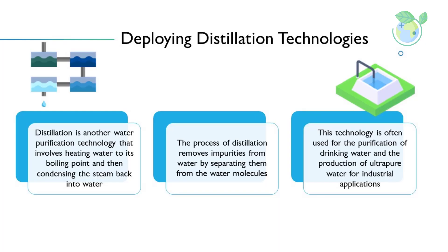Distillation is another water purification technology that involves heating water to its boiling point and then condensing the steam back into water. The process of distillation removes impurities from water by separating them from the water molecules. This technology is often used for the purification of drinking water and the production of ultra-pure water for industrial applications.